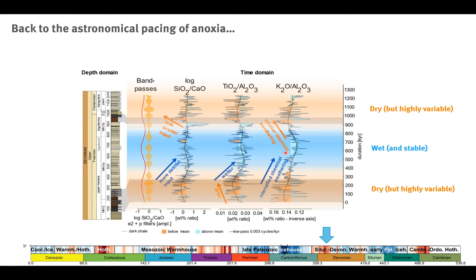Returning to the long-term eccentricity timescale, we can subdivide our record into three parts: first, the lower Kellwasser interval — relatively dry but highly variable; then the interval between the Kellwasser events — wet, with a lot of chemical weathering and lower-amplitude cycles suggesting stable climate; and finally the upper Kellwasser and the interval above — dry and highly variable climate again.